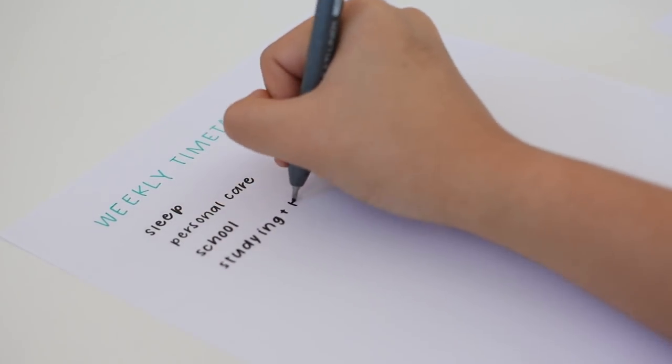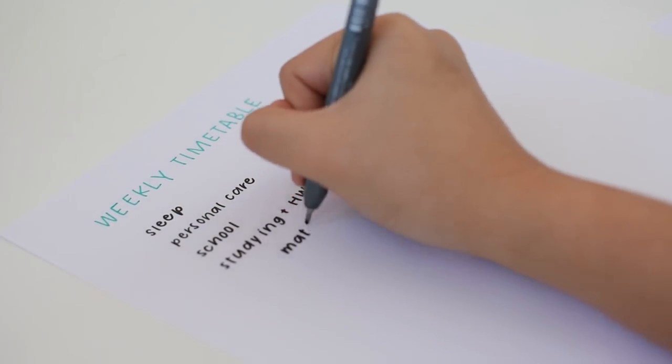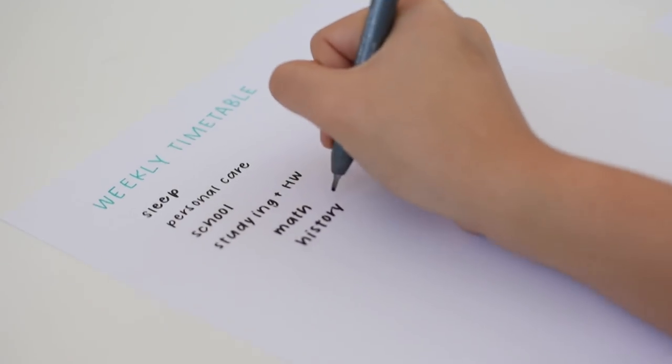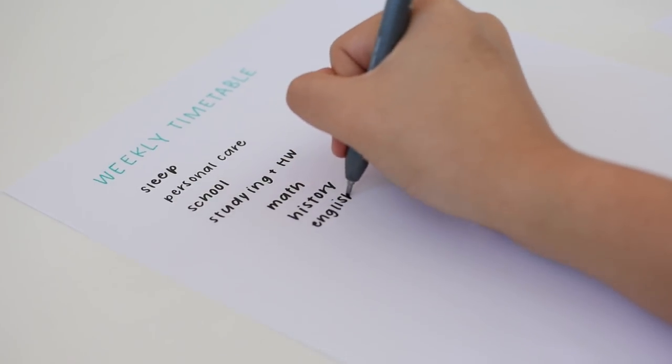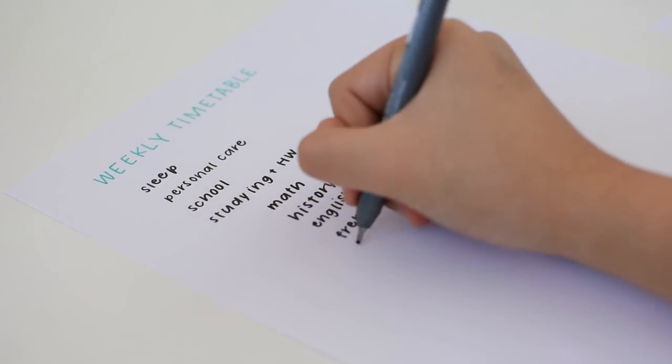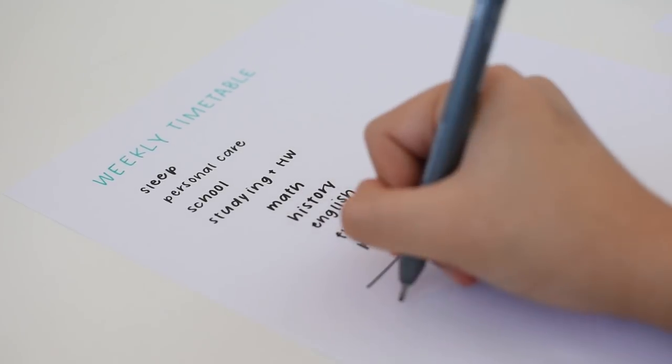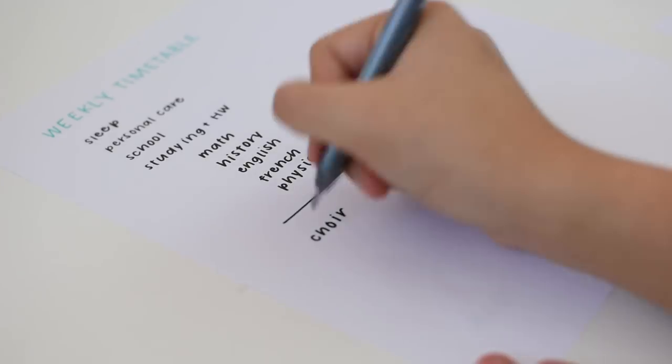This includes sleep, personal care like eating and showering, going to school, studying and doing homework for each class, things you do for fun, and all of the activities that you want to do.